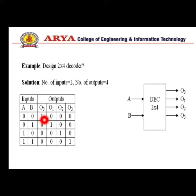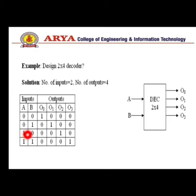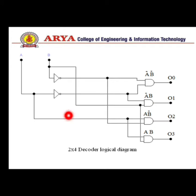D0 equals 1 when A equals 0-0. D1 is 1 when A equals 0-1. D2 is 1 when A equals 1-0, B equals 0. D3 is 1 when A and B both equal 1. This is the general block diagram in which A and B are the inputs and D0 to D3 are the outputs of this decoder.